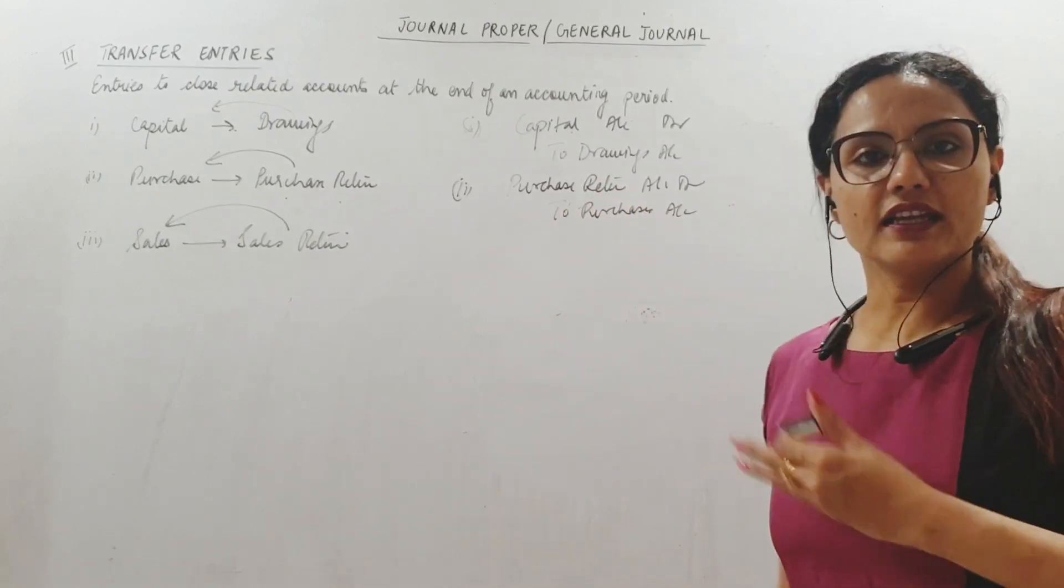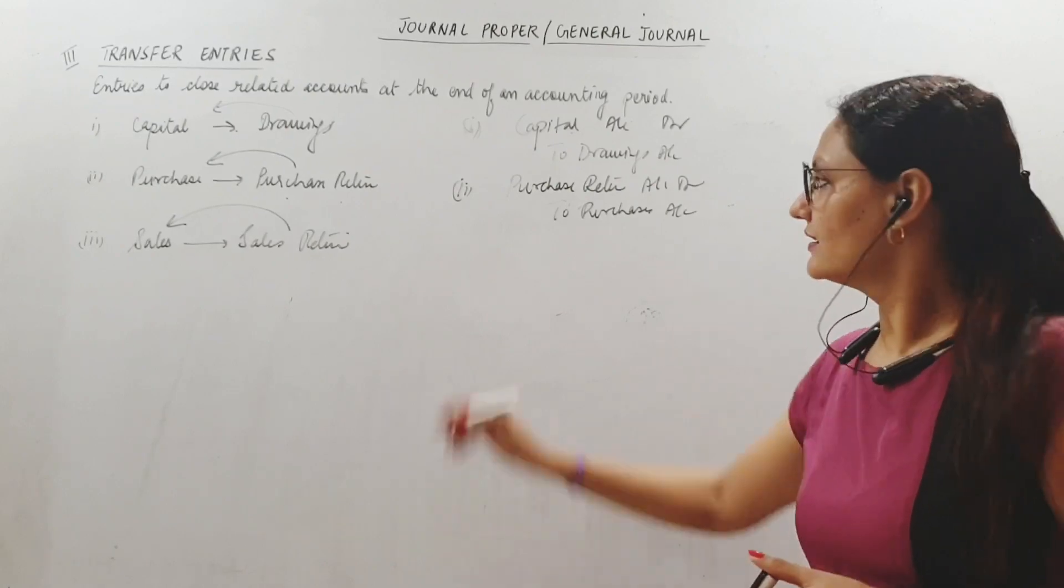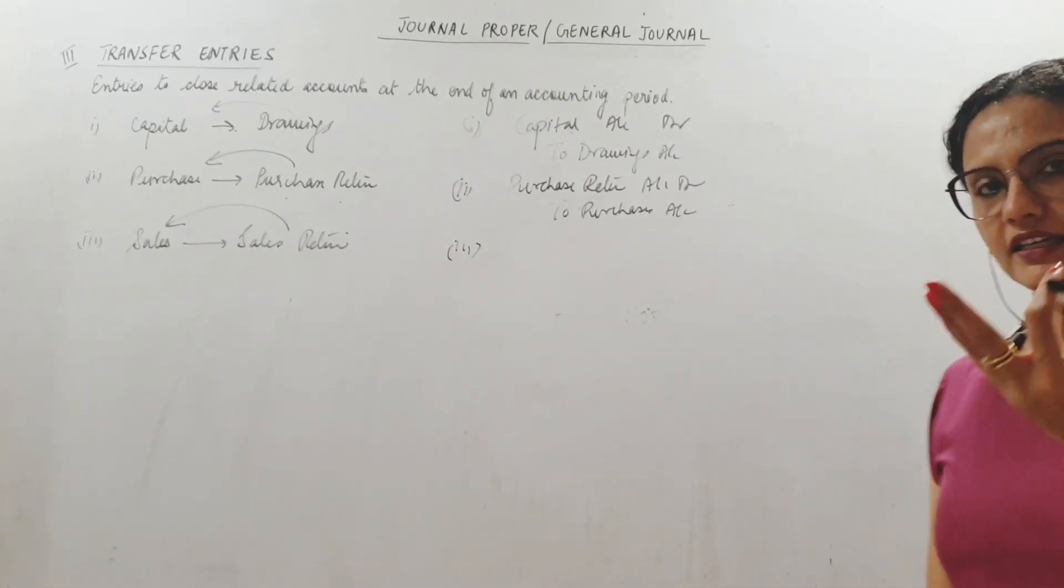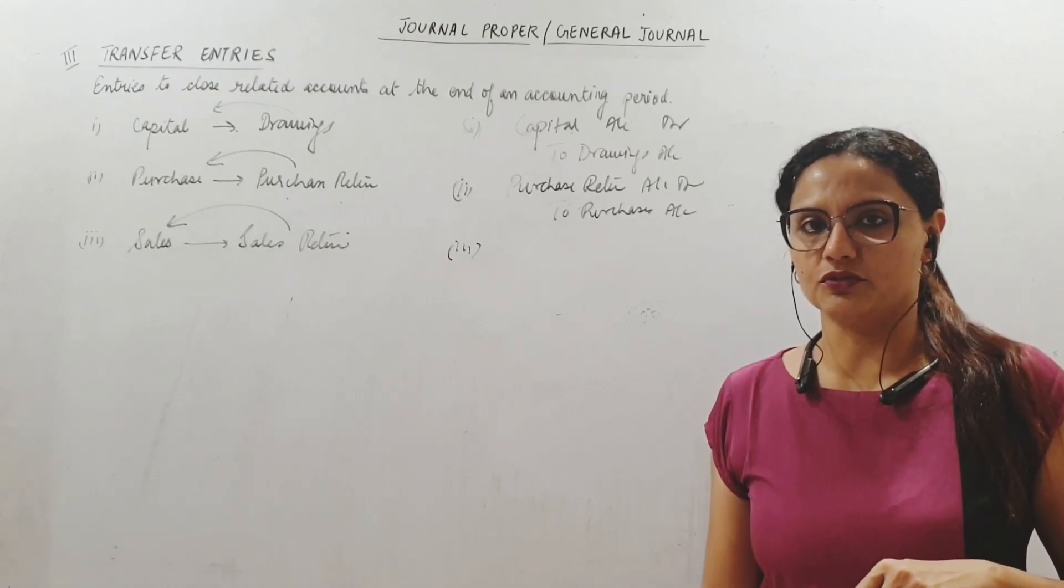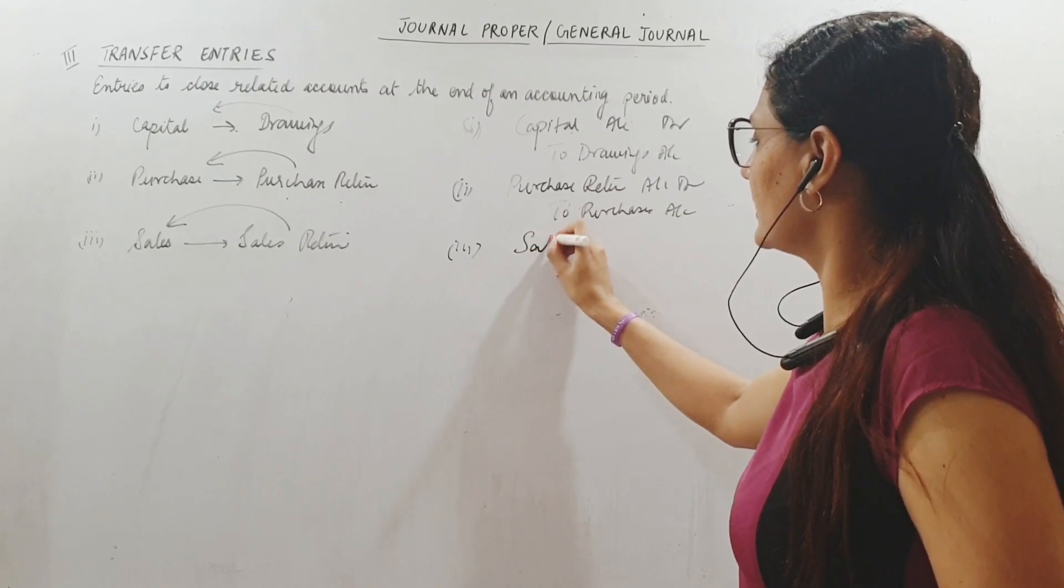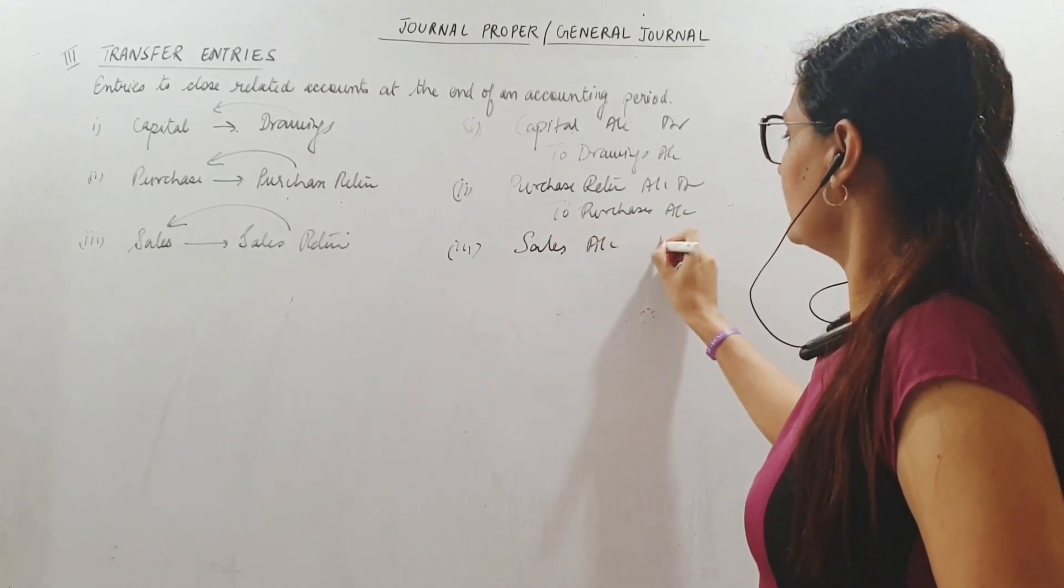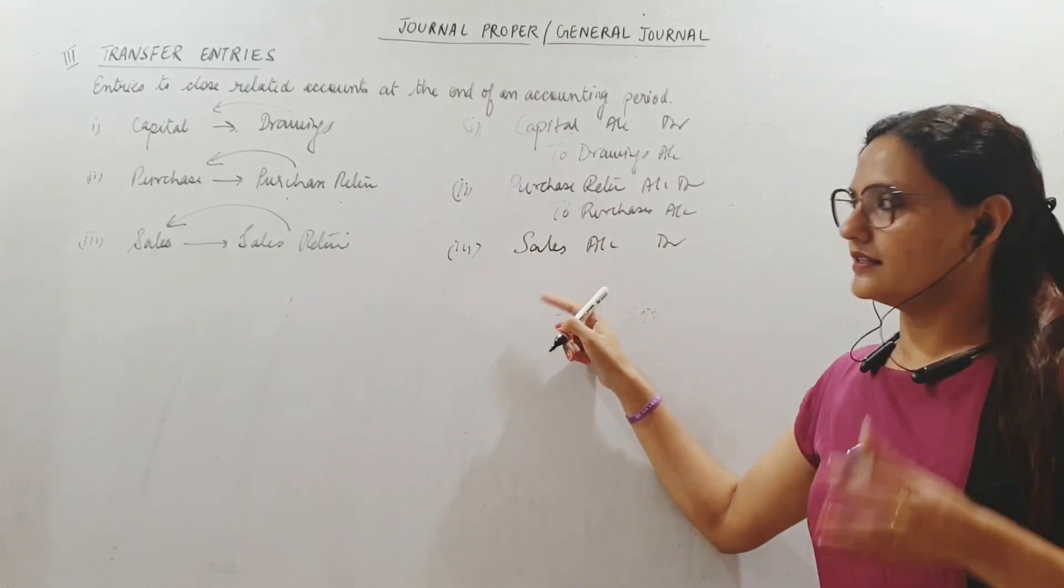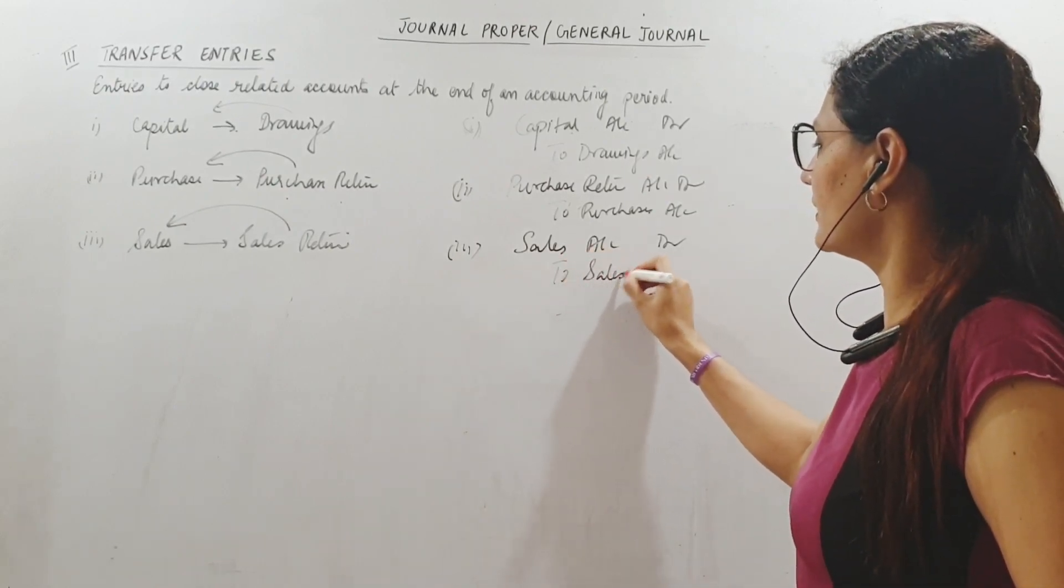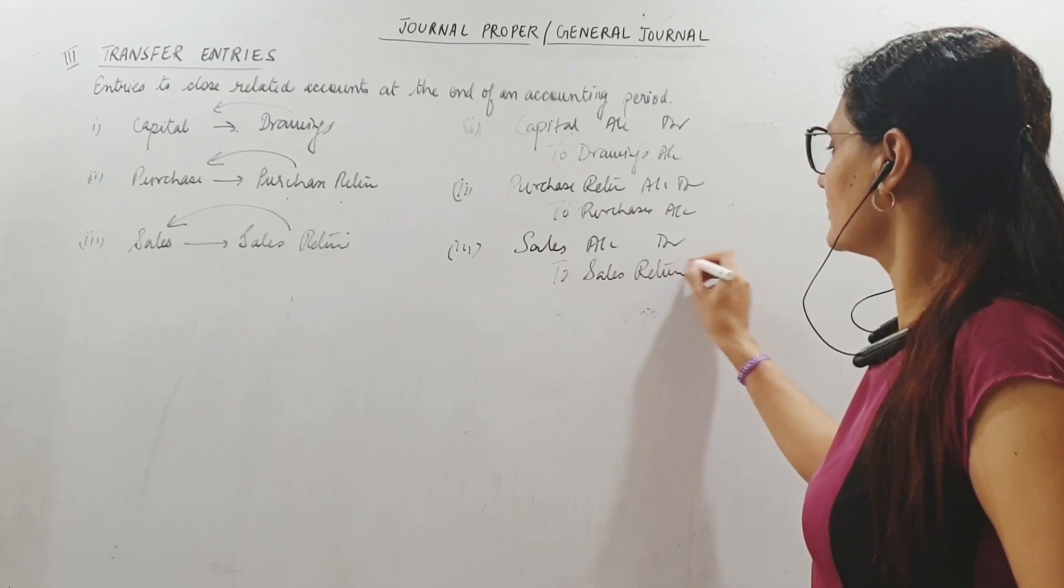Then purchase. Purchase account which is an expense - all expenses are debited when they increase. Now basically if I subtract purchase return, my net purchase will be lesser. So to close purchase return account, debit it because purchase return is always credit, and we credit purchase account. Adjustment, yes.